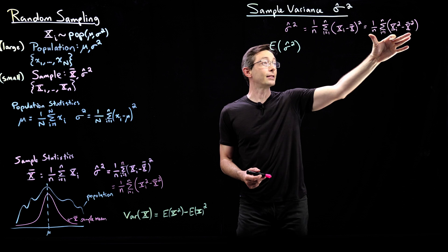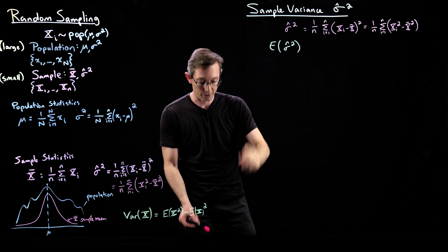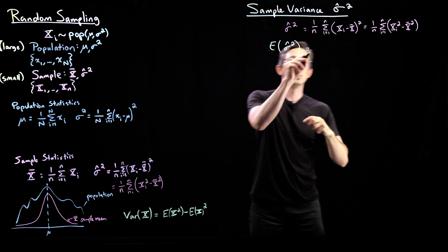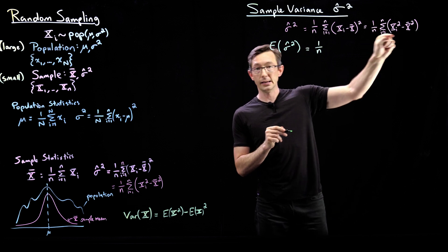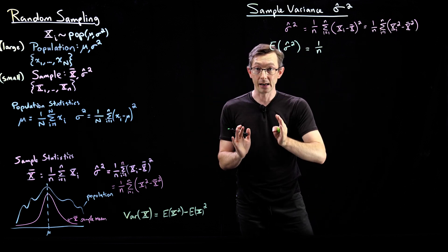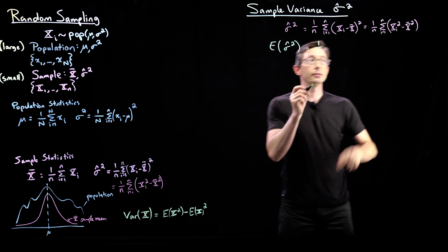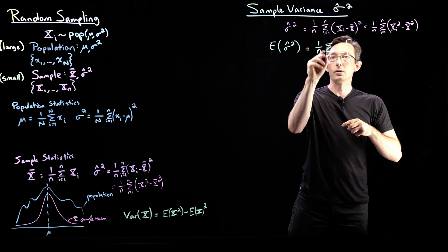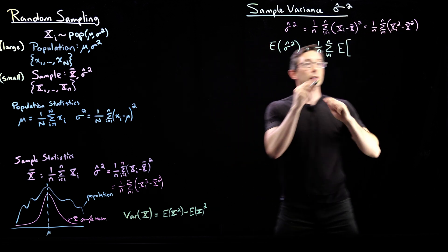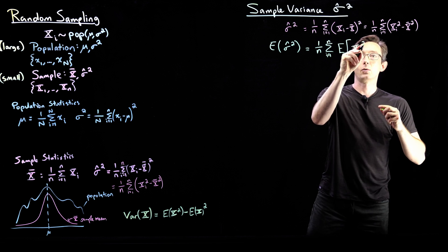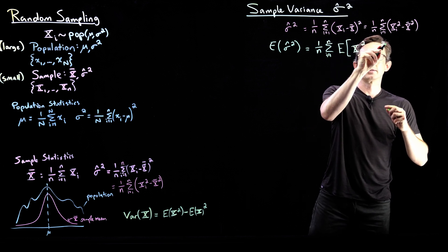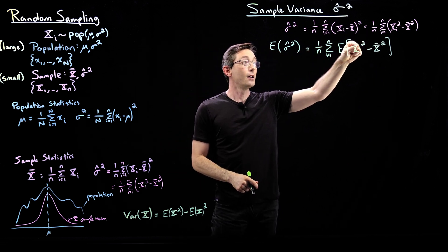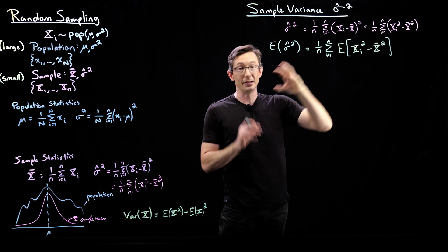This is correct. We're going to take this sum and plug it into the expected value. I can pop the constant 1/n out of the expected value, and the expected value of a sum is the sum of expected values. So it's the sum from i equals 1 to n of the expected values of x_i squared minus x-bar squared.